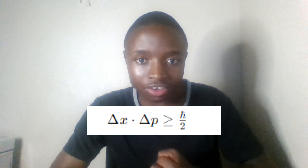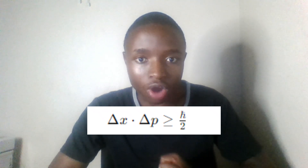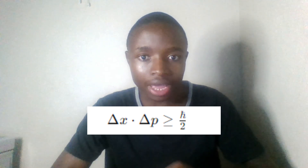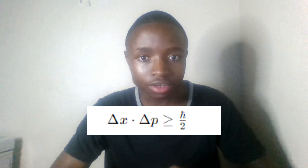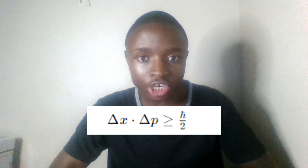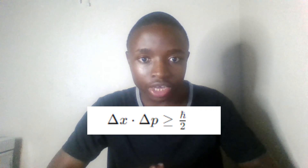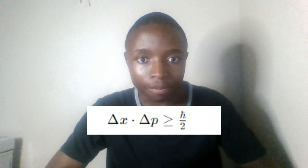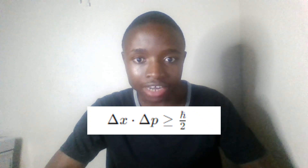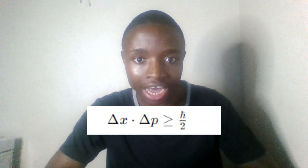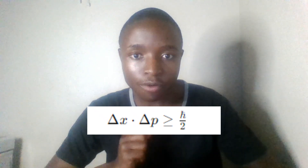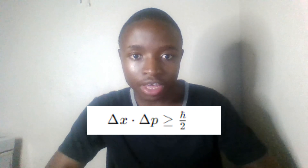Besides quantization and the uncertainty principle, we have to know about quantum superposition and entanglement. When it comes to quantum superposition, you can look at the thought experiment in which you have a cat that is both dead and alive — until you perform a measurement on the system.